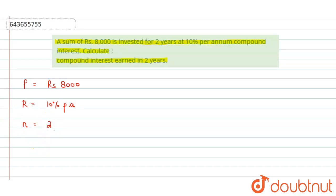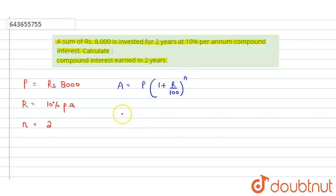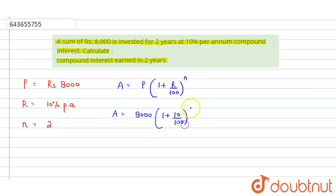Now we will apply the formula for amount. Amount is equal to P multiplied by (1 + r/100) to the power n. So amount equals 8000 multiplied by (1 + 10/100) to the power 2.